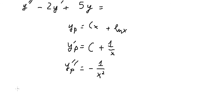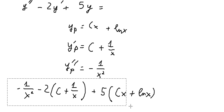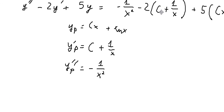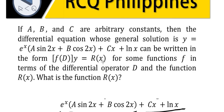We substitute everything back into the equation and find the values on the right-hand side. Putting this back, we get the final answer for all the constants.